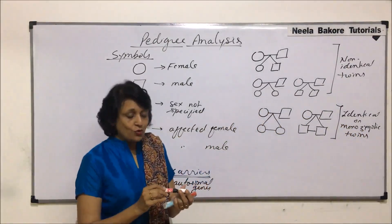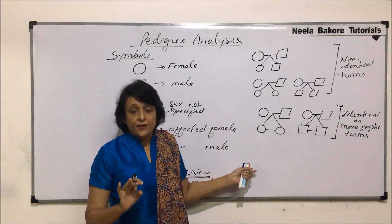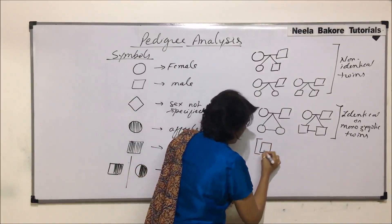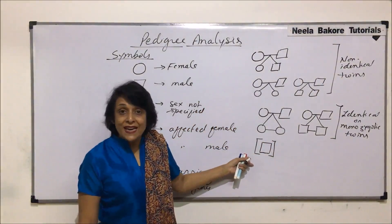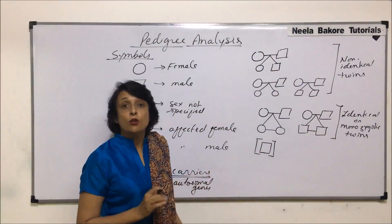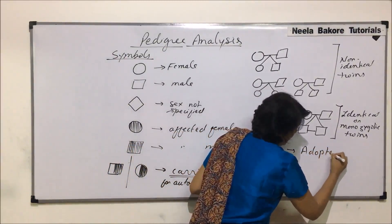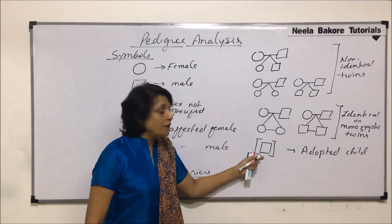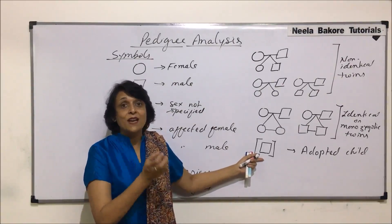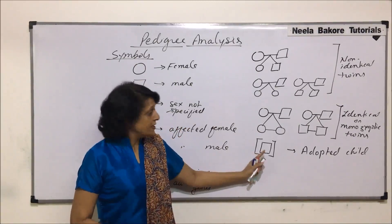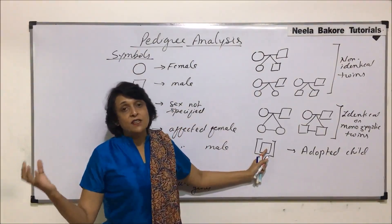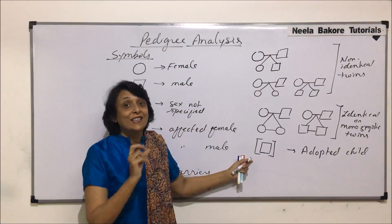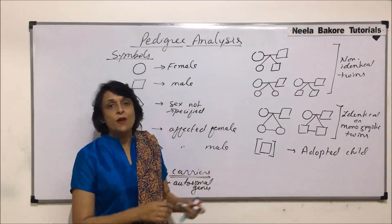In some pedigrees, we find a square or circle put in brackets or parentheses. This means that the child is adopted. Whenever we are talking of genetics, the adopted child is not going to show the same genes as seen in the adoptive parents, because this child is coming from some other biological parents. The present parents are just taking care of this child, so there would be some genetic difference.